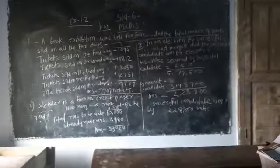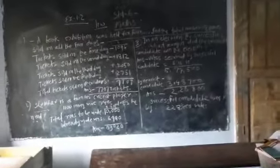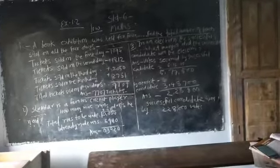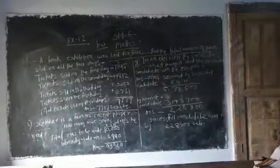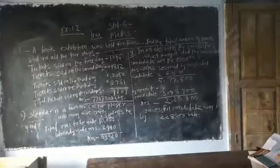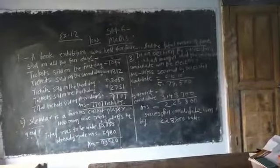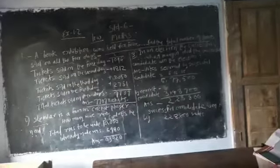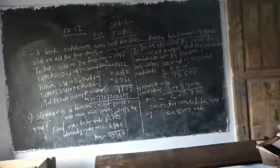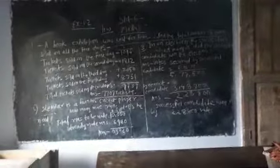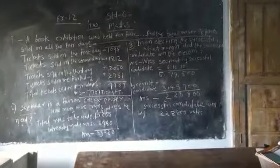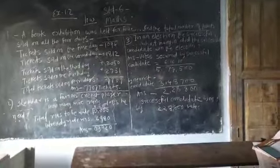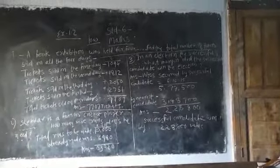We will subtract the nearest candidate's votes from the successful candidate's votes. The successful candidate got 5,77,500 and the nearest candidate got 3,48,700. So we will minus: 5,77,500 minus 3,48,700 equals 2,28,800. The successful candidate won by a margin of 2,28,800 votes.